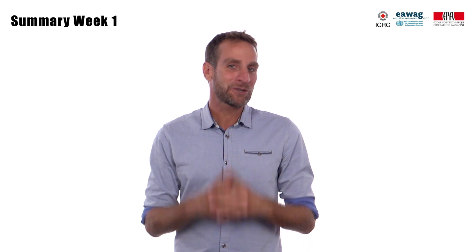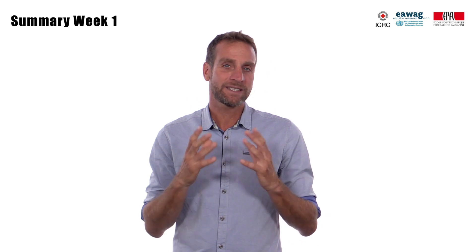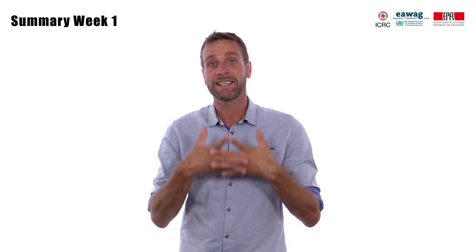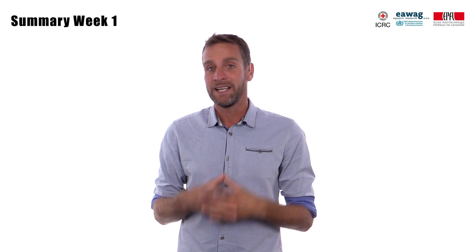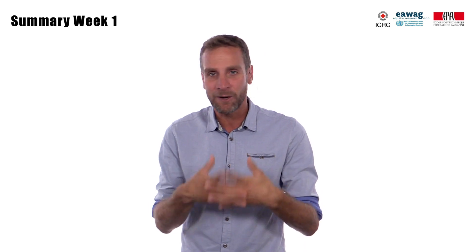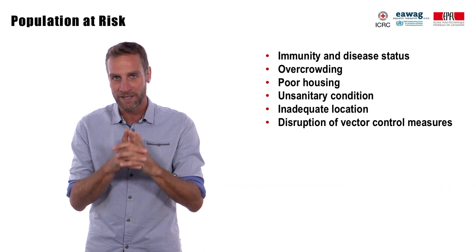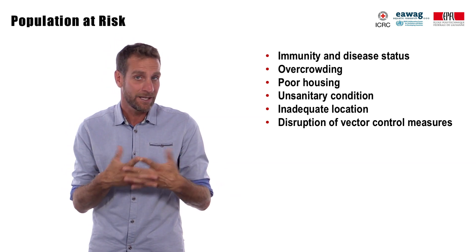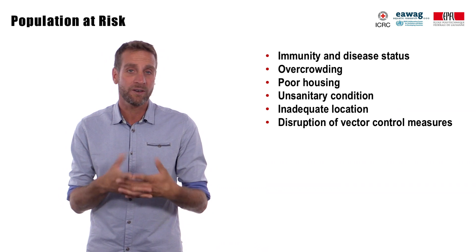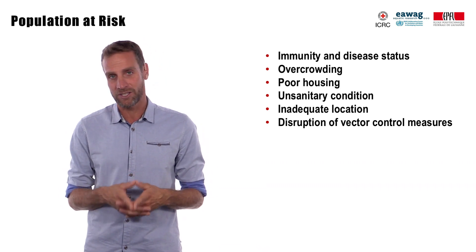Well done, you made it through the first week of this course. During this week we have seen that communicable diseases such as diarrheal diseases and malaria are a major cause of mortality and morbidity in humanitarian contexts, where the population is particularly at risk due to various factors such as stress, malnutrition, overcrowding, poor housing and unsanitary conditions.